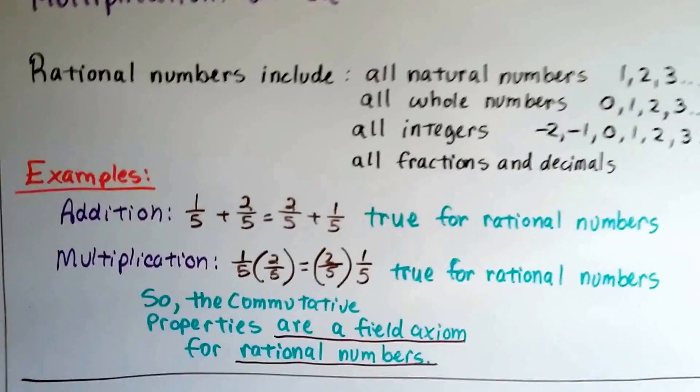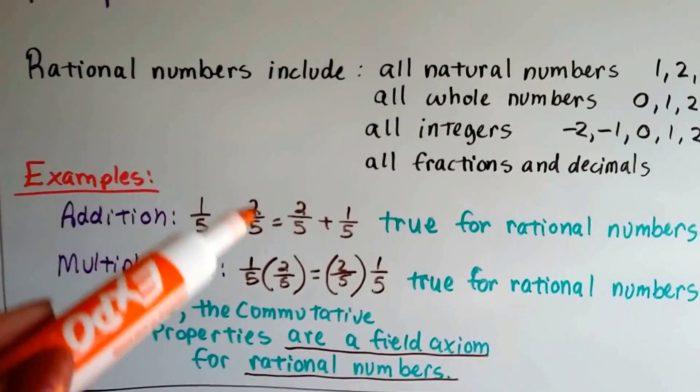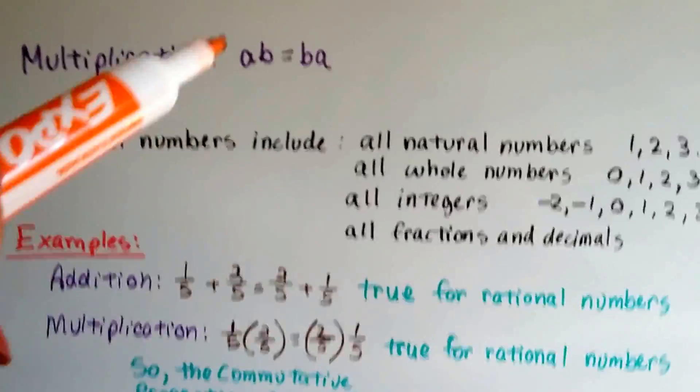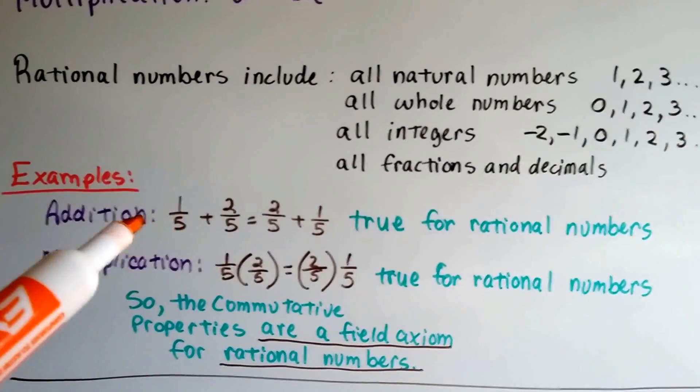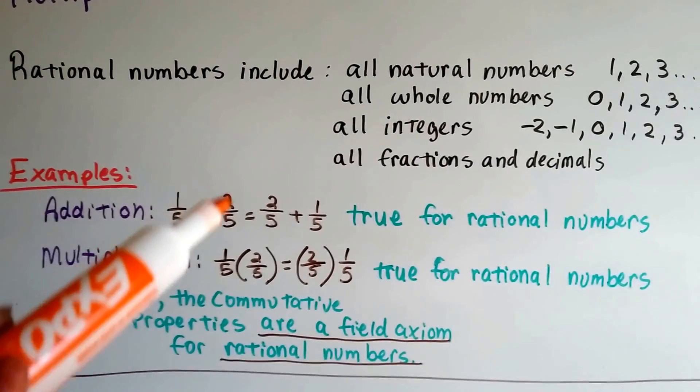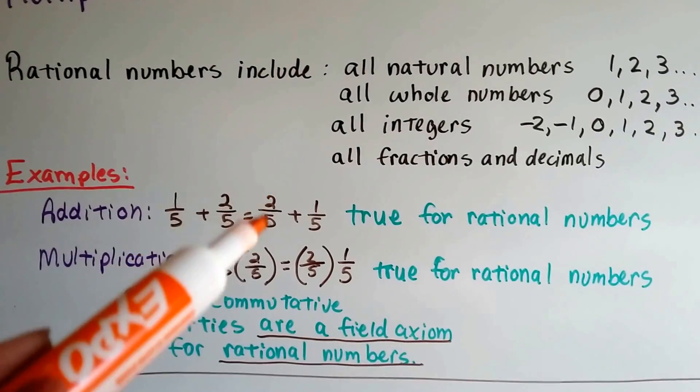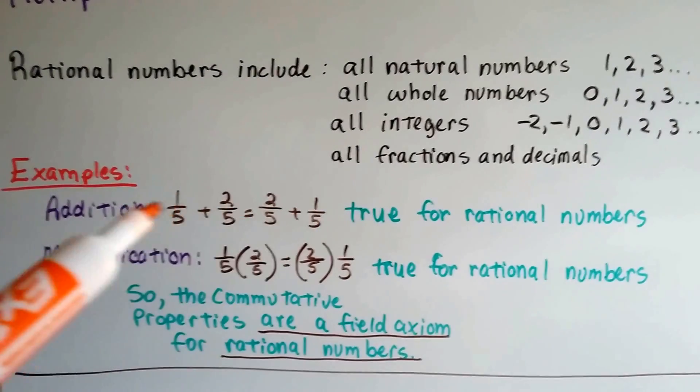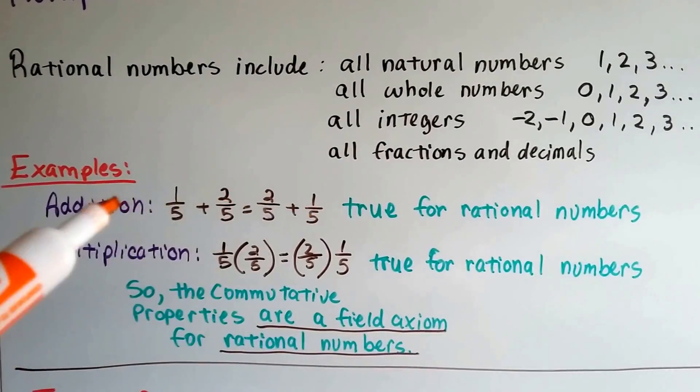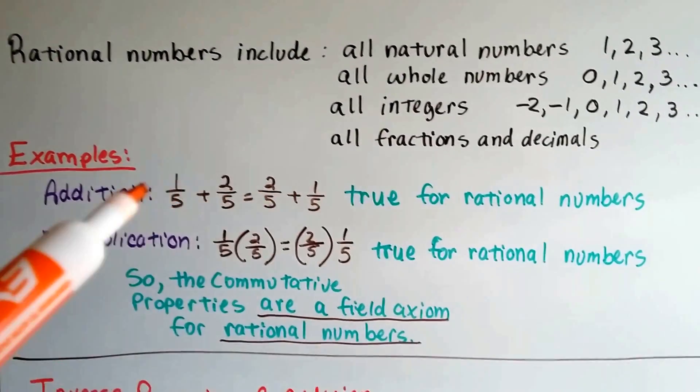So for addition, if we were to plug in these rational numbers, these fractions, instead of the a and the b, we'd get one-fifth plus two-fifths. Those are both rational numbers. It's going to equal two-fifths plus one-fifth. And this is true. This works, doesn't it? So this property is true. And it works for all rational numbers.